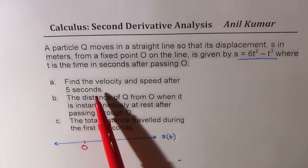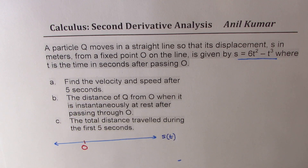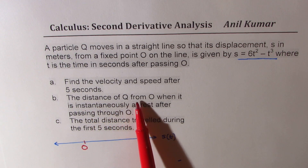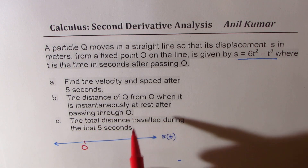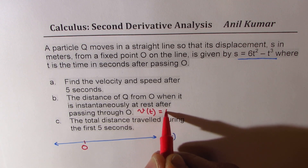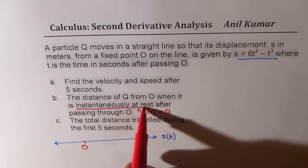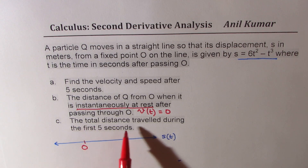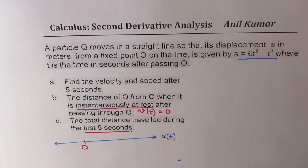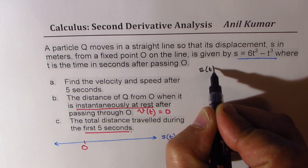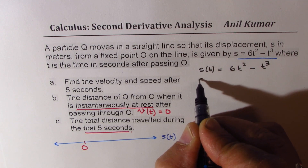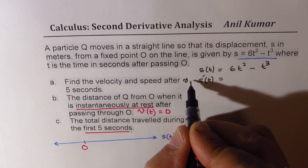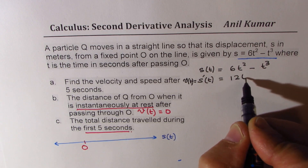There are three questions to answer. Part A: find the velocity and speed after 5 seconds — you need to find the derivative to get the velocity. Part B: distance of Q from O when it is instantaneously at rest after passing through O, meaning we look for velocity equal to zero. Part C: total distance traveled in the first five seconds. To find velocity, we differentiate S of T equals 6T squared minus T cubed, giving us the velocity function V equals 12T minus 3T squared.